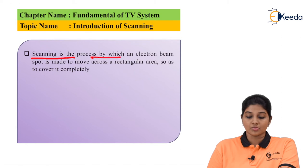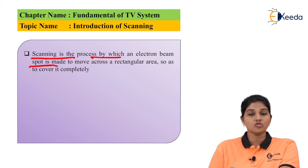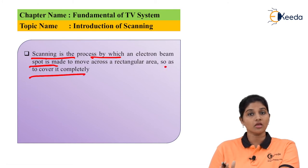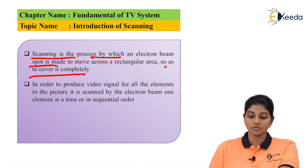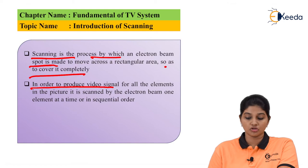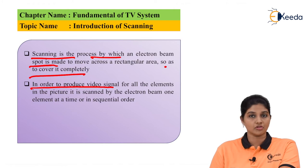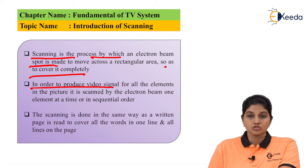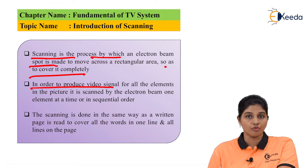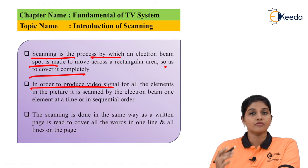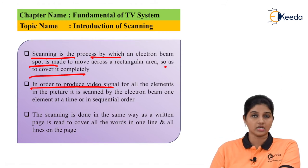Scanning is a process by which the electron beam spot is made to move across the rectangular area so that it covers the entire rectangular area completely — that rectangular area being the screen of the television. In order to produce a video signal or picture on the screen, all elements of the picture are required to be scanned by the electron beam one by one in a sequential manner. Scanning is similar to reading a page of a book — we start from the top, covering words in one line, then move from top to bottom. Similarly, scanning covers all elements in a single line and from top to bottom.